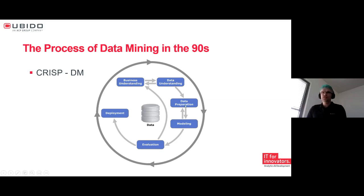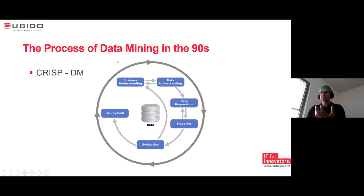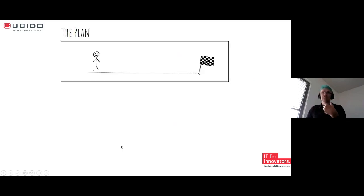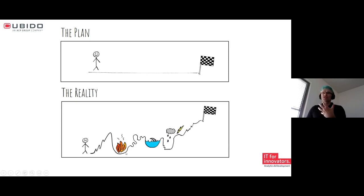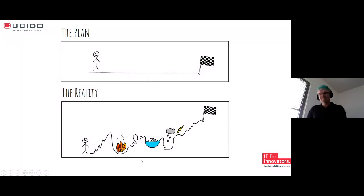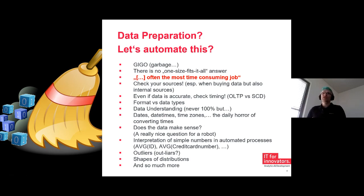CRISP-DM is a cycle: understand the business, understand your data, prepare the data, model, evaluate, and deploy. This always keeps repeating, just like agile software development. You plan everything neatly, but reality is different — for example, you plan to collect temperature measurements, then your temperature sensor fails, giving you missing data right at the same time you have an error on another side. But that doesn't mean every sensor failure causes an error — that would be the prediction.